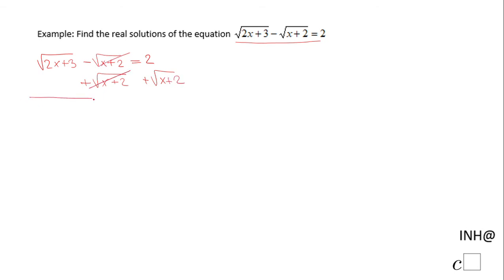Then I have square root of 2x plus 3 on the left side, and on the other side we have 2 plus square root of x plus 2. Now we want to get rid of this square root of 2x plus 3.